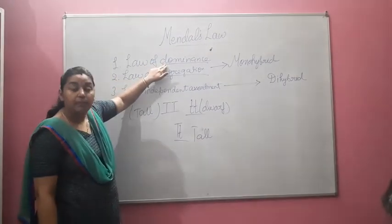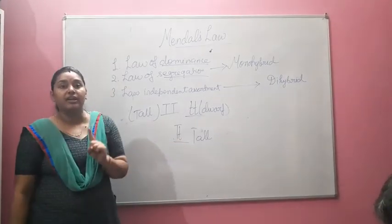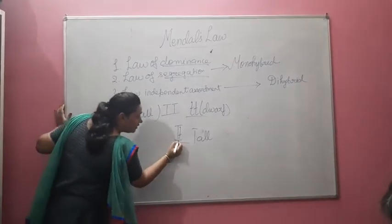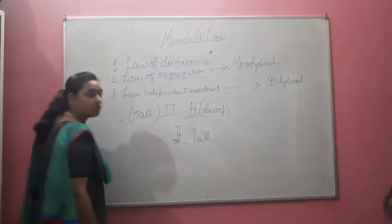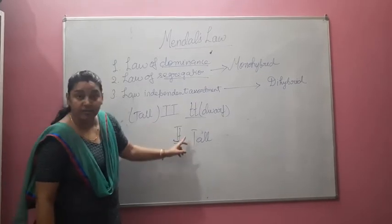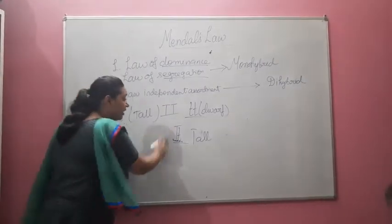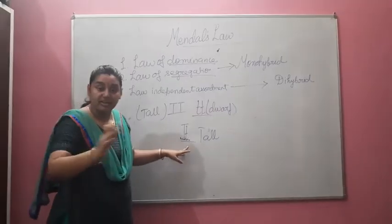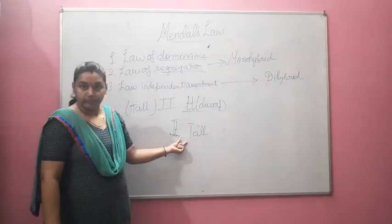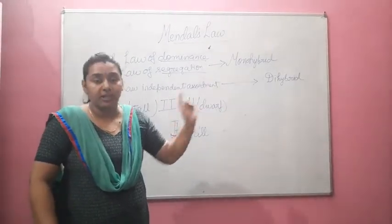In the Law of Dominance, Mendel said that from either of the gametes or either of the alleles, only one is going to be the dominating one. For example, when a plant is Tt, it is going to be tall and capital T is going to be dominating. The other allele, small t, which is the allele of dwarf, is going to mask itself — it will hide itself. It is not that in this tall plant there is no allele of dwarf; it is present there, but the dominating nature of tall has hidden the dwarf character. This is the Law of Dominance, where one single allele is going to dominate the other one.